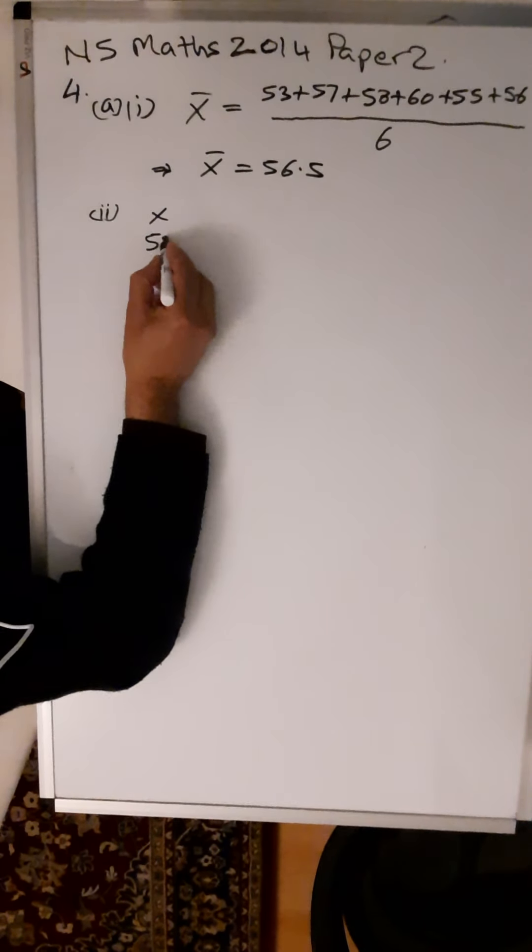Now what you have here at the bottom of the third column is the sum of (x minus x̄) all squared. Your actual standard deviation formula is the square root of—in the numerator, that's what you have in the numerator—sum of (x minus x̄) all squared.